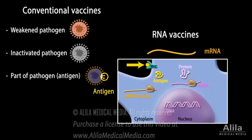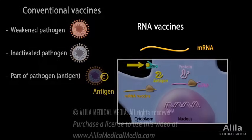The antigen is then displayed on the cell surface where it is recognized by the immune system. From here, the sequence of events is similar to that of a conventional vaccine.